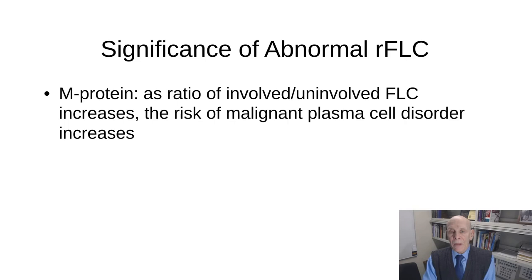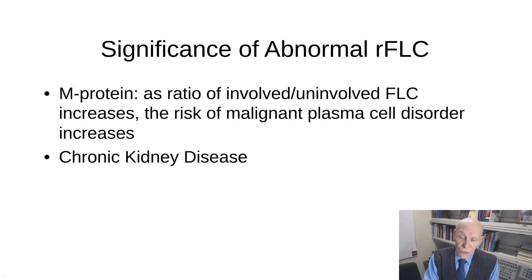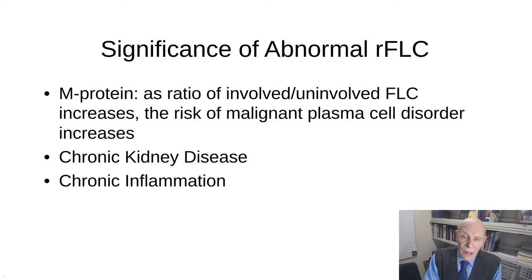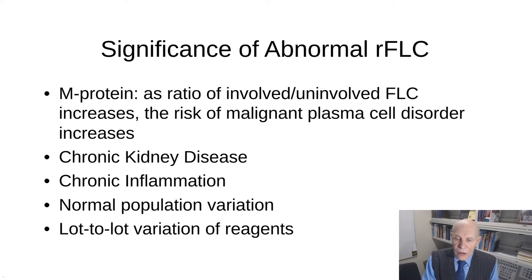Abnormal serum free light chains can mean many things: chronic kidney disease (because light chains have more difficulty passing through the glomerular filtrate), chronic inflammation in some cases, normal population variation, and lot-to-lot variation in reagents. Importantly, many studies including Bradwell's original found that chronic inflammation doesn't often cause an increase in the ratio itself.